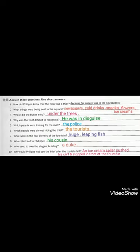Four, why was the thief difficult to recognize? لماذا كان من الصعب إدراك اللص ومعرفته؟ He was in disguise، كان متنكرا. Five, which people were looking for the man? من هم الناس الذين كانوا يبحثون عن الرجل؟ The police، الشرطة. Six, which people were almost hiding the thief? من هم الناس الذين كانوا دائما يختبئ بواسطتهم اللص؟ The tourists، السياح. Number seven, what were in the four corners of the fountain? ماذا كان يوجد في الزوايا الأربعة للنافورة؟ Huge leaping fish، أسماك ضخمة. Eight, who called out to Philip? من نادى على Philip؟ His cousin، ابن عمه. Nine, who used to own the elegant building? من كان معتاد على استخدام البناء الأنيق؟ The duke، الدوق. Ten, why could Philip not see the thief after the tourists left? لماذا لم يستطيع Philip أن يرى اللص بعد مغادرة السياح؟ An ice cream seller pushed his cart and stopped in front of the fountain. لأنه بائع الآيس كريم دفع عربته وتوقف في أمام النافورة.